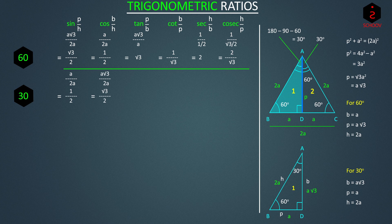And tan 30 is perpendicular by base, 1 by root 3. Cot is 1 by tan 30, that is root 3. Sec is 1 by cos, 1 by root 3 by 2, that is 2 by root 3. And cosec is 1 by sin 30, that is 2.